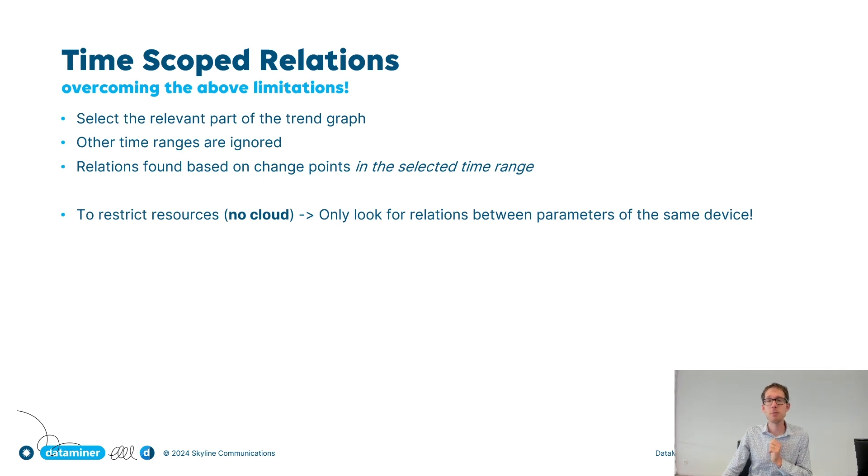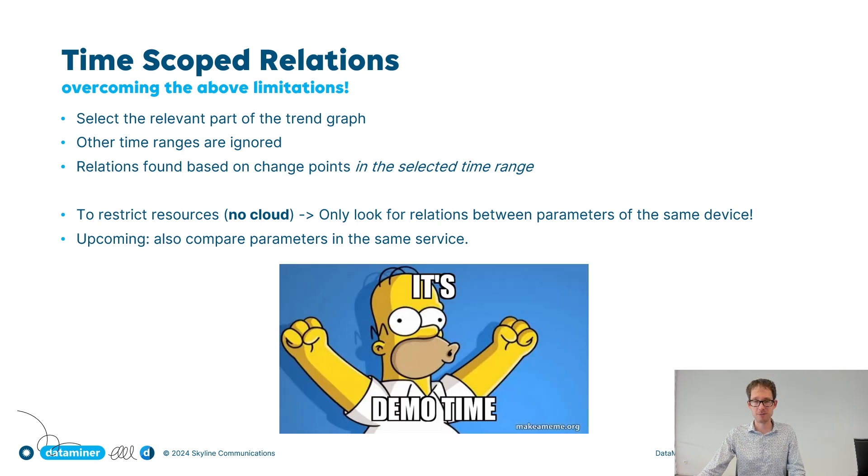Now as I said, this algorithm does not run on the cloud. So we had to do our best to really restrict the resources that are used. That's why, at the moment, when you select a time range on a parameter, DataMiner is only going to compare this time range for all the other parameters of that same device. It's not going to try to find relations between parameters on completely different devices. Now we do want to improve this. In fact, one of our plans is to also allow the algorithm to find relations on devices that are in the same service as the original device. But this is still work in progress.